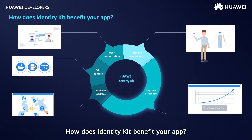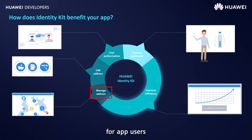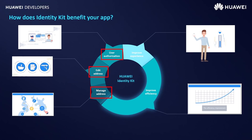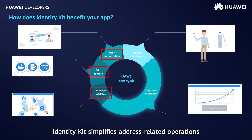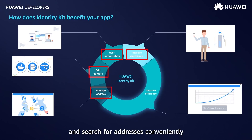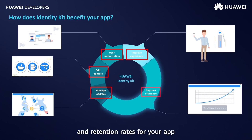How does IdentityKit benefit your app? IdentityKit provides unified address management services for app users. After obtaining user authorization, your app can directly obtain stored user addresses. IdentityKit simplifies address-related operations in your app, allowing users to select, enter, edit, and search for addresses conveniently on a single page. These features all help to improve user conversion and retention rates for your app.